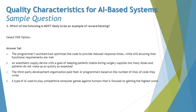The next question is about reward hacking: which of the following is most likely to be an example of reward hacking? Again, the word 'most' is used because options can be close, but one will be most relevant. Option A: a programmer's assistant tool optimizes code to provide reduced response time while still ensuring functional requirements are met. This is not reward hacking because the tool is achieving two goals with no detrimental effects.